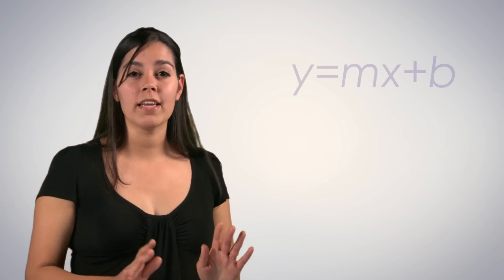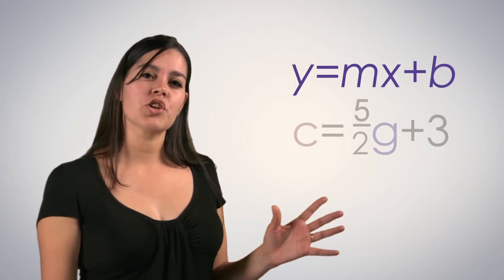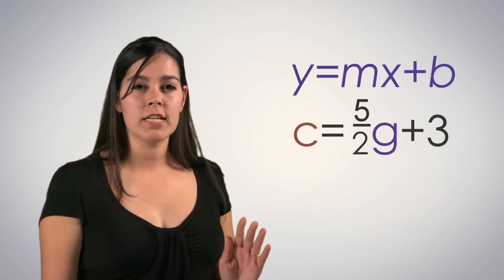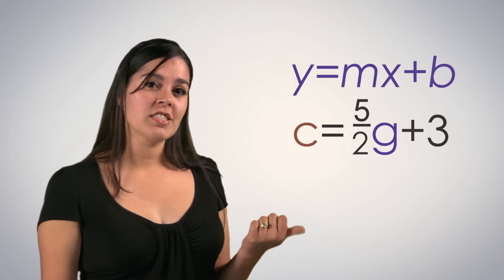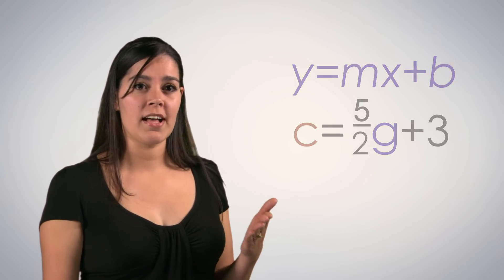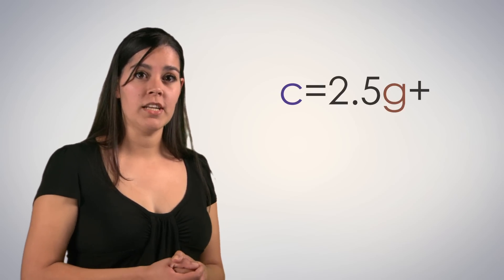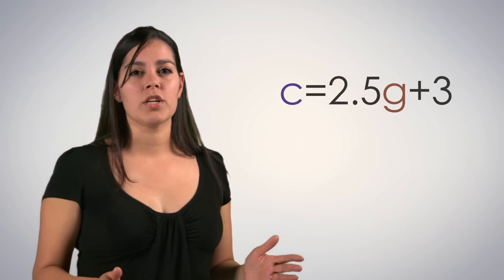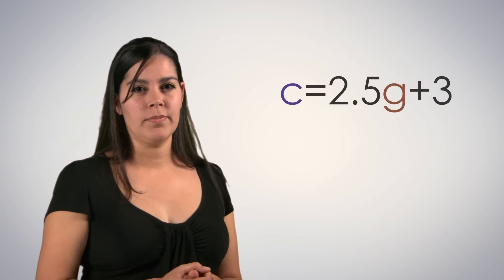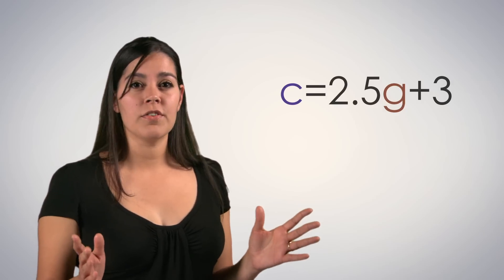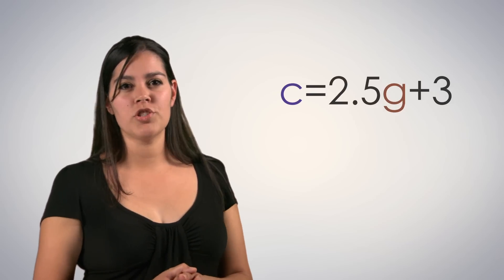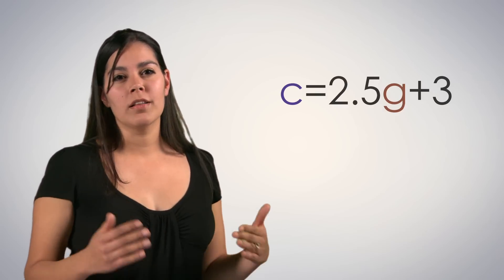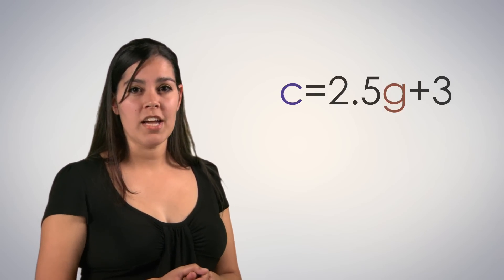We can also understand the context of a word problem involving an equation in the form y equals mx plus b. Perhaps this function represents a trip to a convenience store, where c is the total cost, and g is the gallons of gas purchased. Because we're working with money, let's convert our fractions to decimals, and rewrite this function as c equals 2.5g plus 3. In this situation, what could the 2.5 and 3 represent? The 2.5 would be the $2.50 cost of gas per gallon. The 3 could be a $3 cost of a monster energy drink. Putting it in this form allows us to immediately see the constant rate of change and the initial amount.